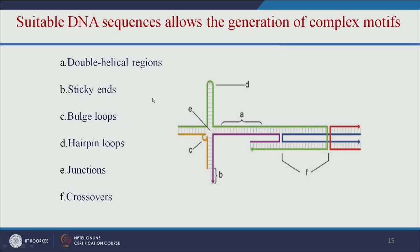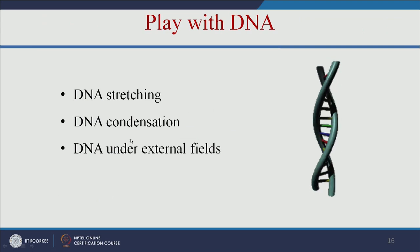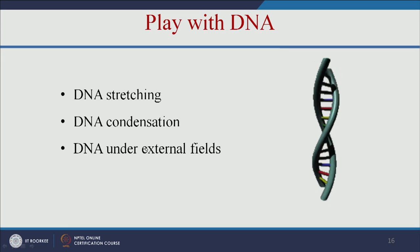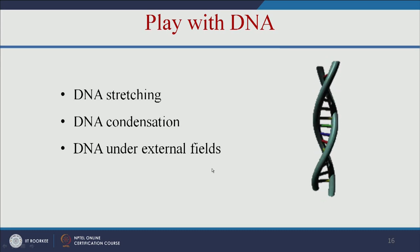Before we see how to make nanomachines, let us understand some terminologies. Here you can see a double helical region; B is sticky ends — that means overhangs; C is a bulgy loop; D is a hairpin loop; E is a junction; and F is a crossover. Using DNA, we can stretch it, condense it, and play with it using external fields.